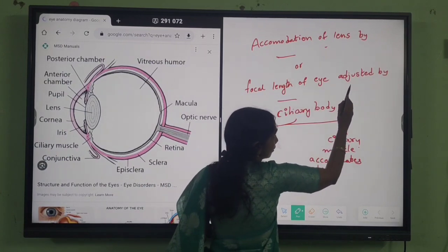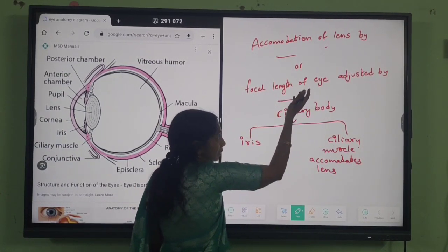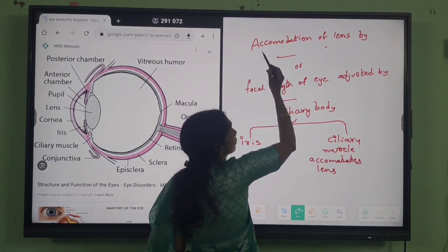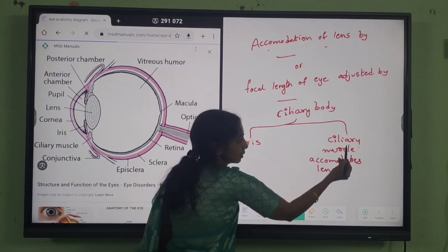So focal length of the eye is adjusted by ciliary muscle. The same question can be given in this format: Accommodation of lens by ciliary muscle.